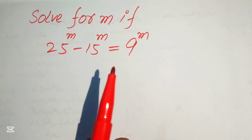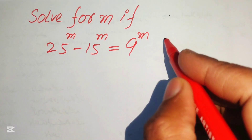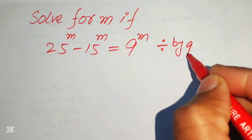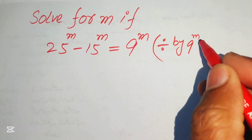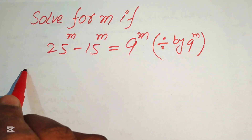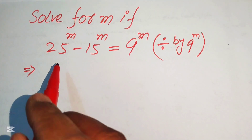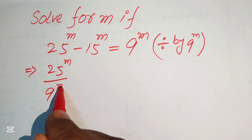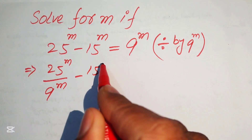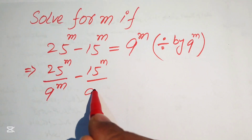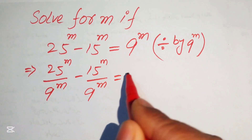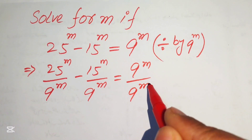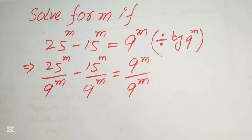The very first step is to divide both sides by 9 to the power of m. We divide each term by 9 to the power of m, so we write it as: 25^m divided by 9^m, minus 15^m divided by 9^m, equals 9^m divided by 9^m.